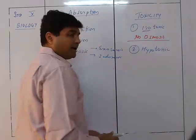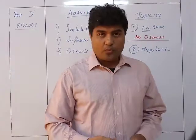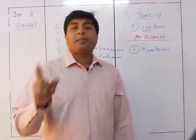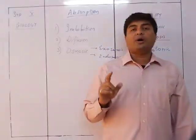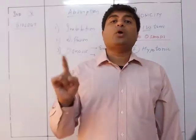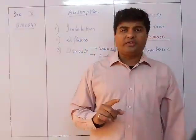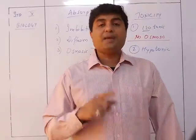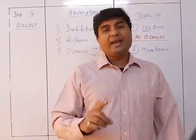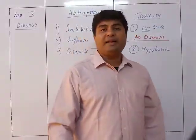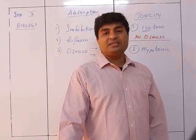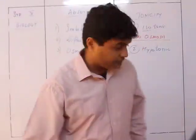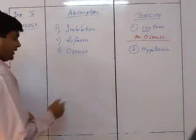The next type is hypotonic. 'Hypo' means lower or less. In this condition, the solution outside the cell has a lower solute concentration. Whenever we talk about tonicity — hypo or hyper — we are always talking about the solute concentration, not the solvent. So hypotonic means less solute, more water. Accordingly, in a hypotonic condition, water will enter into the cell.